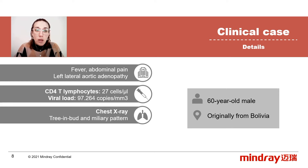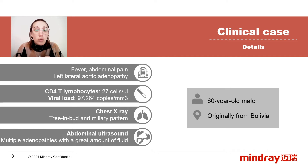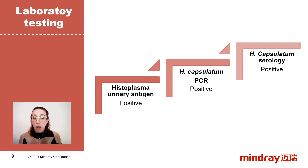Chest X-rays showed an interstitial and micronodular pattern and multiple nodules with random distribution in both lung areas. These are typical pulmonary patterns of mycosis caused by Histoplasma capsulatum. Abdominal ultrasound showed small adenopathies in different parts of the gastrointestinal tract with a great amount of fluid. As the adenopathies were difficult to access, it was impossible to take a sample for a diagnostic biopsy.